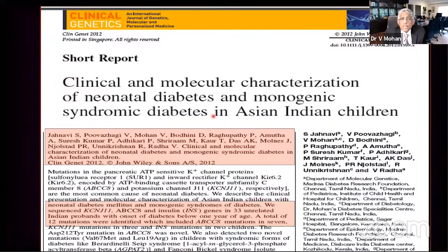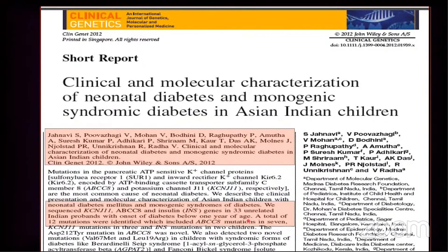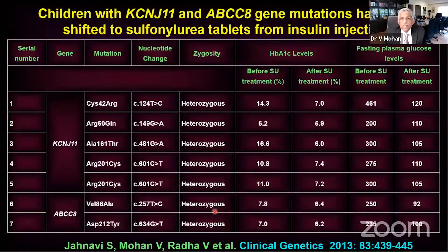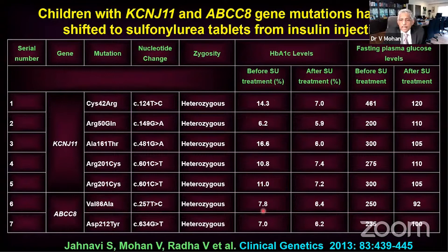The first paper we published was in Clinical Genetics in 2012 — about ten years ago — with 33 cases. We reported the spread of KCNJ11 and ABCC8 mutations. In seven of these cases, HbA1c while on insulin ranged from 7% to 16%, coming down beautifully to 5–7% on sulfonylurea. Fasting blood sugar also normalized — while on insulin they were not responding, but on sulfonylurea they responded perfectly.